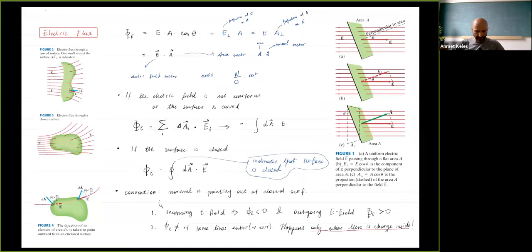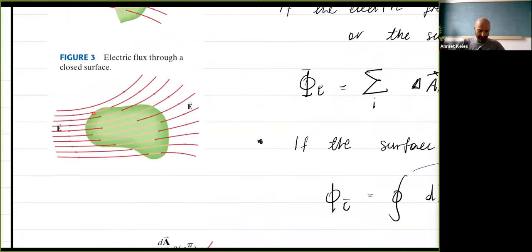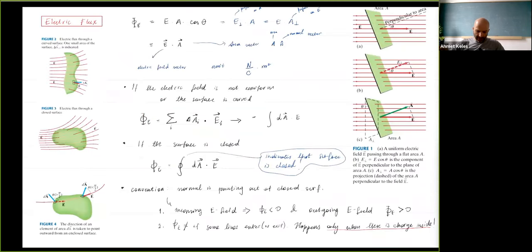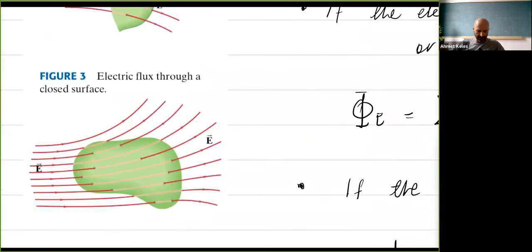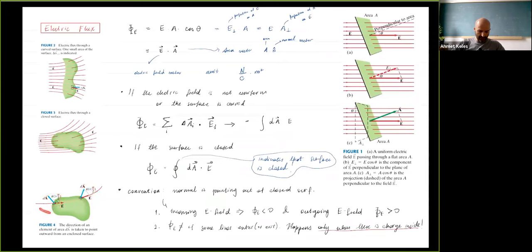If an external field passes through a closed surface, whatever comes in also comes out. So the number of lines in equals the number of lines out, and the total flux is zero. This happens only if there is no charge inside the enclosed surface.